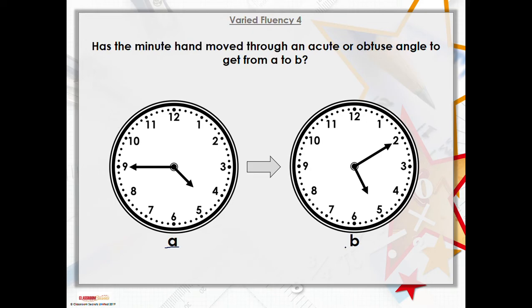We're going from time a to time b, so the minute hand, that's what we're focusing on. Now if I draw on clock a, the minute hand's got to get from the nine to the two - nine to the two. Okay, clockwise is in this direction.